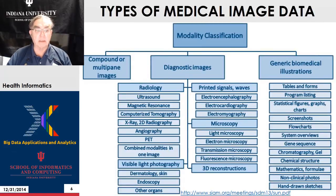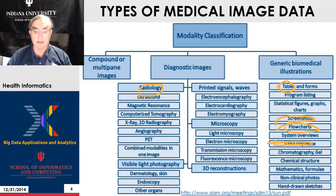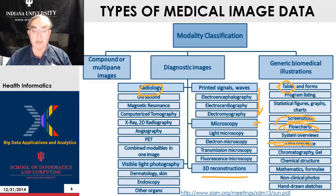This is a classification of types of medical images. We have gene sequences, screenshots, flowcharts, and tables. We also have radiology, ultrasound, magnetic resonance, tomography, and x-ray, among all sorts of other modalities. There is visible light photography of the skin, various brainwave detections, microscopy, and many other modalities. Everything can be done in 2D or 3D. This is not too dissimilar from other fields.